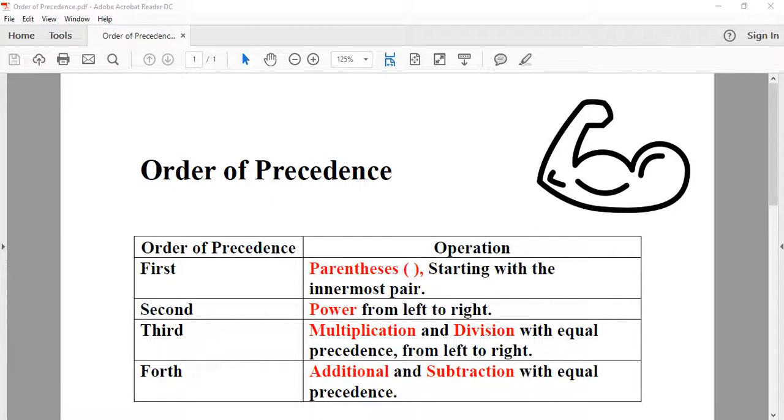The following table describes the order of precedence for every operation. The highest priority goes to the parentheses first, starting from the innermost pair.